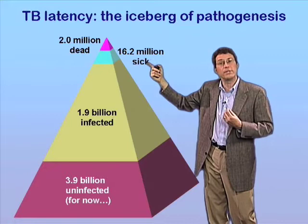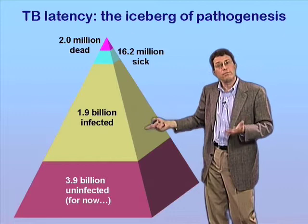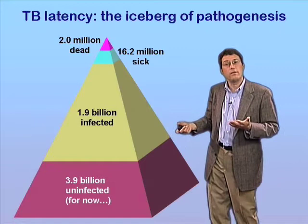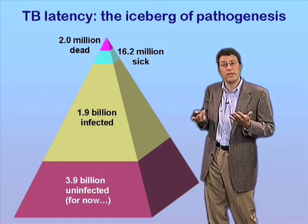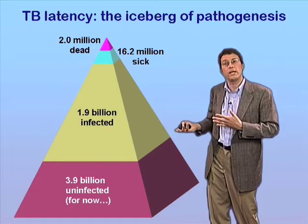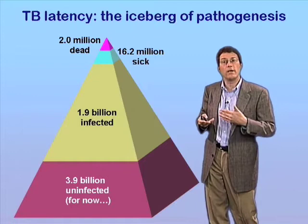That number approaches 2 billion. So at this point in history, about 1 in 3 people on the planet harbor the tubercle bacillus in their tissues and are at risk of developing disease. Now, if these individuals who have latent tuberculosis and are not infectious continued to harbor the infection only in a latent form, this would be a sort of interesting medical curiosity, but not much more. The problem is that individuals who are latently infected are at significant risk for the remainder of their lives of reactivating and developing full-blown infectious tuberculosis.